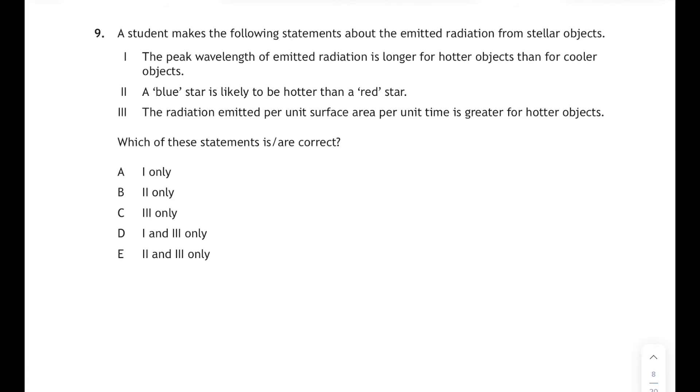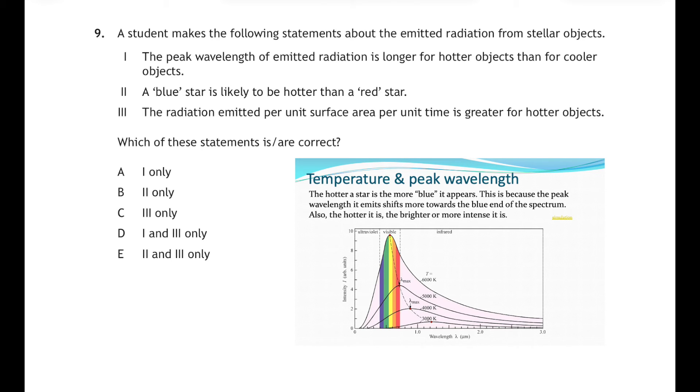Question nine. The student makes the following statements about the emitted radiation from stellar objects. And again this is a triple statement question so we have to decide which of these statements is or are correct. And all these statements refer to the Wien's law diagram that you may well have seen at National 5 or at least I hope you've seen it at Higher. It's this diagram here. This is one of the slides from my stellar evolution powerpoint.